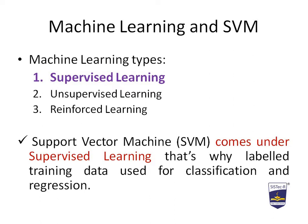Machine learning can be divided into three types: the first is supervised learning, second unsupervised learning, and third reinforced learning. SVM comes under supervised learning, where we have labeled data. This labeled data works as a mentor or guide for further learning. So Support Vector Machine comes under supervised learning — that's why labeled training data is used for classification and regression.